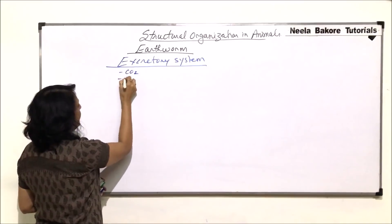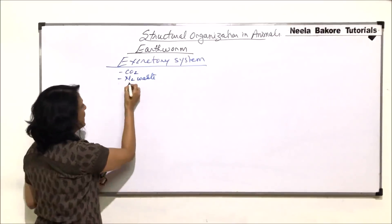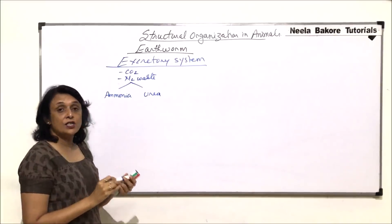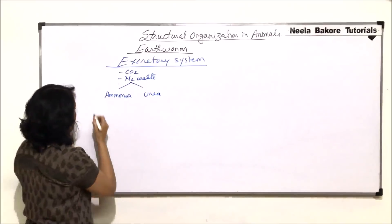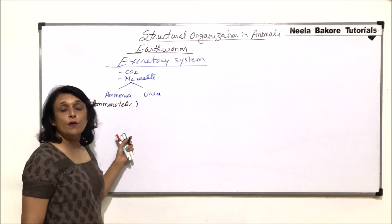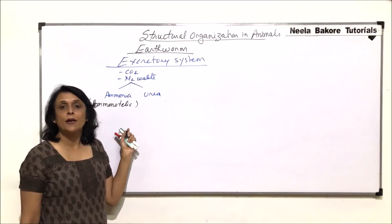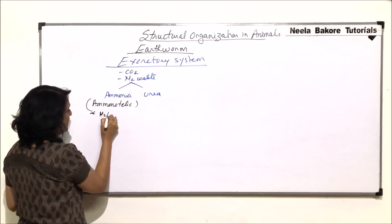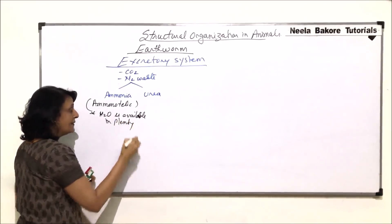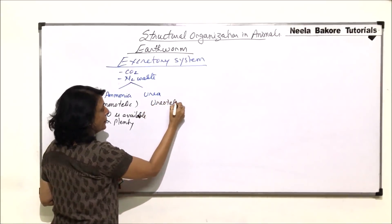In earthworms, nitrogenous waste is eliminated in two forms — it can be ammonia or urea. When ammonia is eliminated, they are called ammonotelic. For removal of ammonia, a large quantity of water is required, so earthworms would be ammonotelic only when water is available in plenty or they are in aquatic conditions.